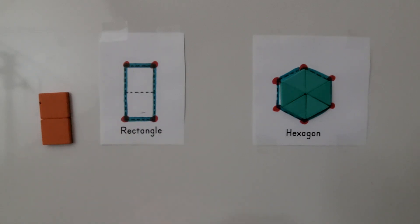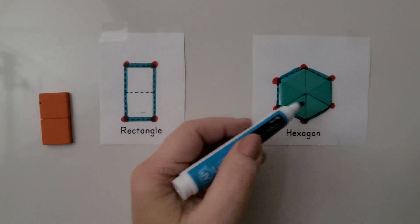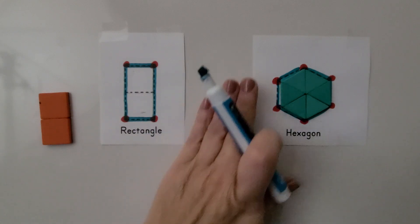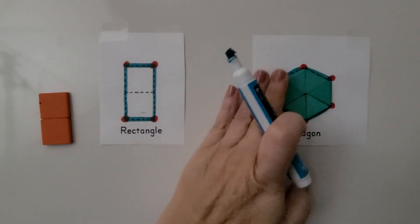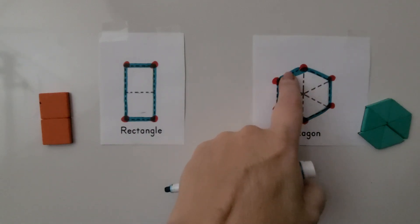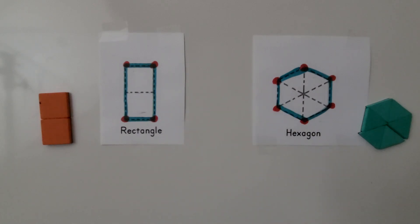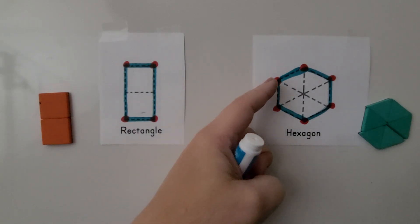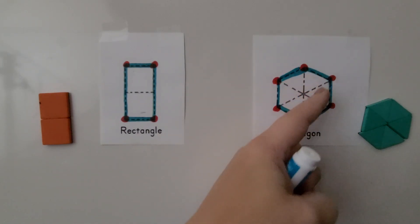And if we trace around the outline of our hexagon that we made with the six triangles, we trace all the way around. We'll see that it has six sides. One, two, three, four, five, six. And it has six vertices. One, two, three, four, five, six.